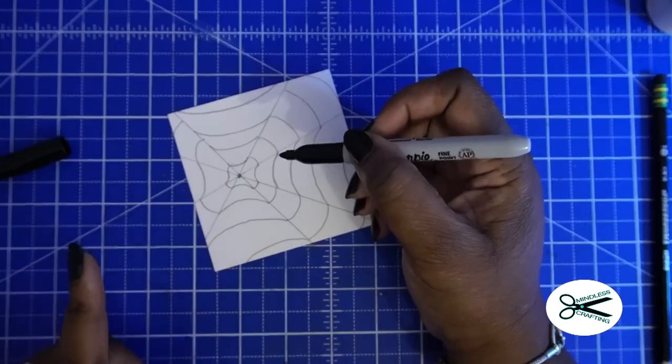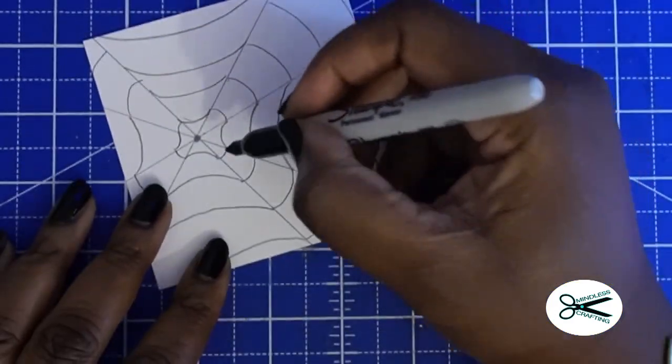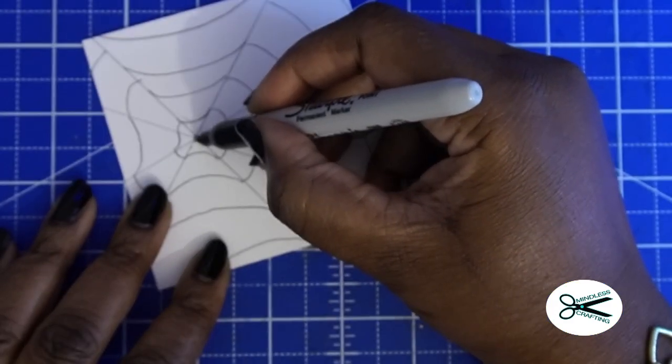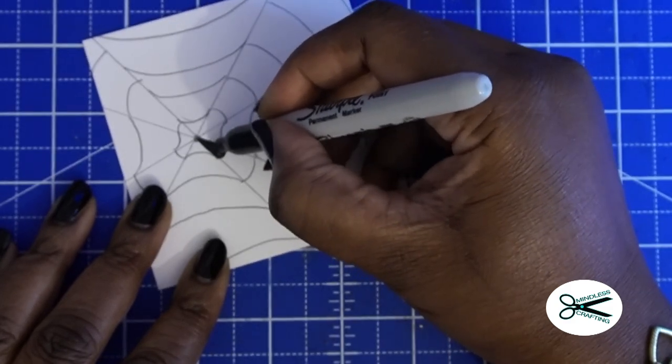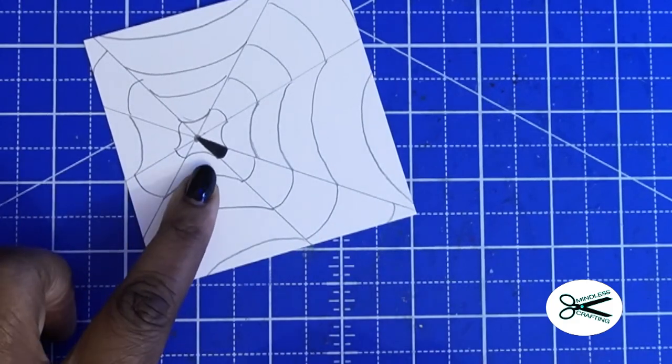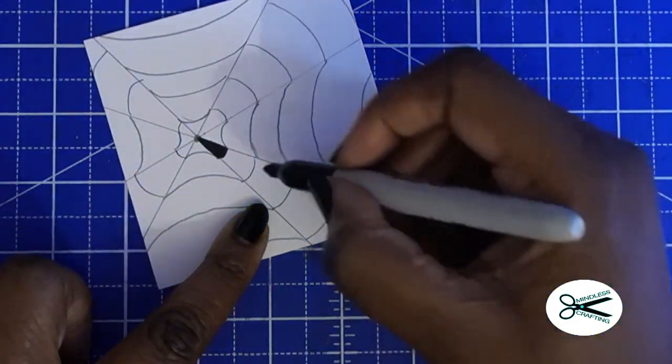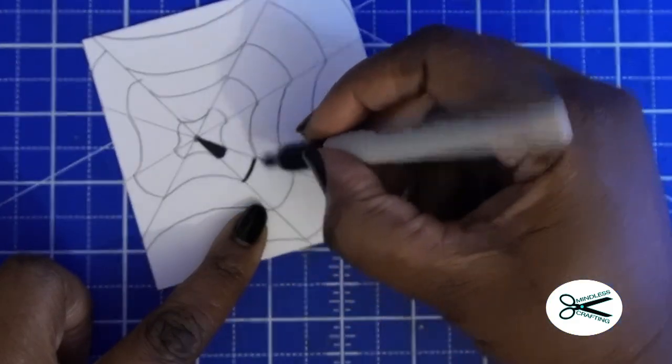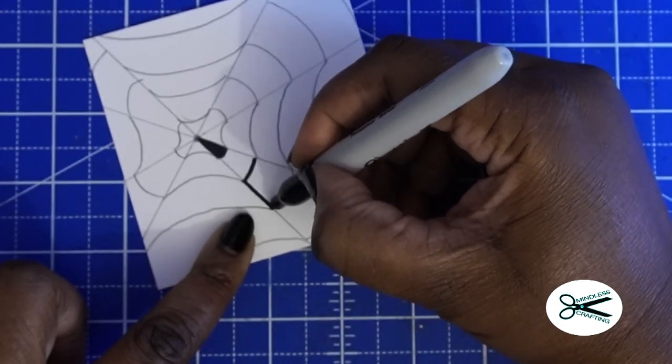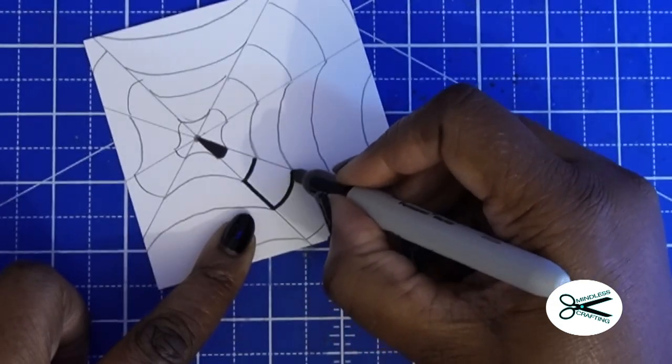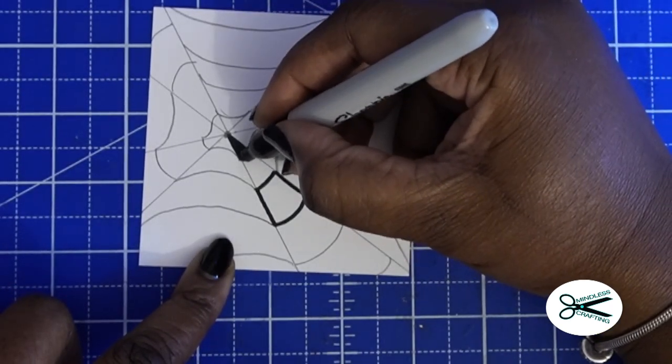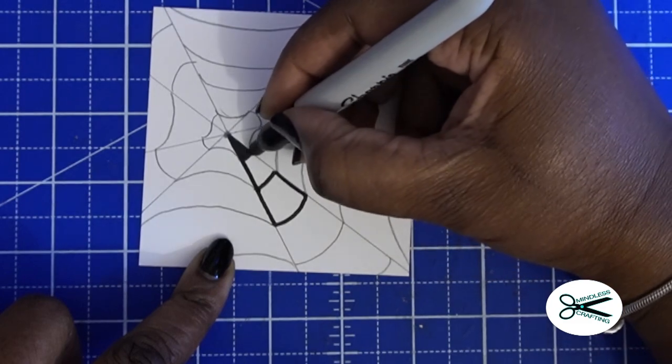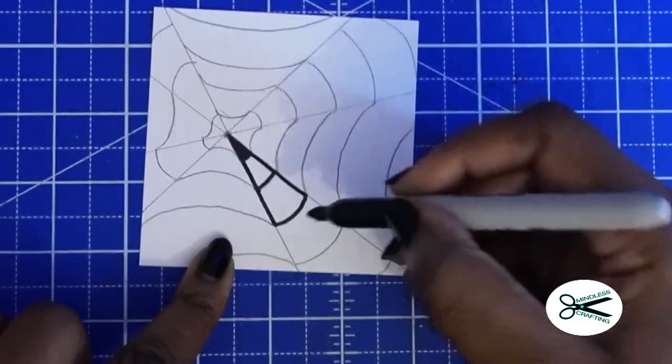And we're going to start coloring this in. So here's an important part. I'm going to start right here in the middle. And I'm just going to trace around this with my Sharpie. Okay, now I'm going to skip this one and go to the next one. Okay, I'm just going to bring this line up. Bring that line up. Okay.